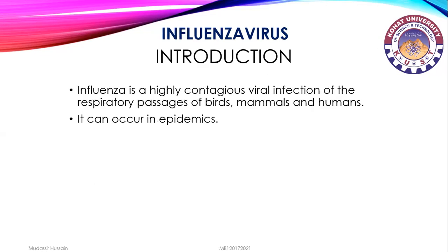Influenza is a highly contagious viral infection of the respiratory passages of birds, mammals, and humans. Contagious diseases spread from one person or organism to another, typically by direct contact. It can occur in epidemics — a widespread occurrence of an infectious disease in a community at a particular time.